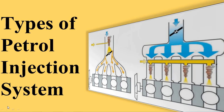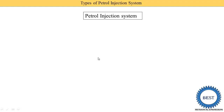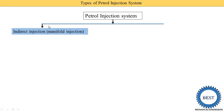In this video we discuss the various types of petrol injection systems in detail. First, the classification: petrol injection is classified into two main categories. The first one is indirect injection, which means petrol is injected into the intake manifold. It is called indirect because petrol is not directly injected into the combustion chamber but is sprayed into the intake manifold.